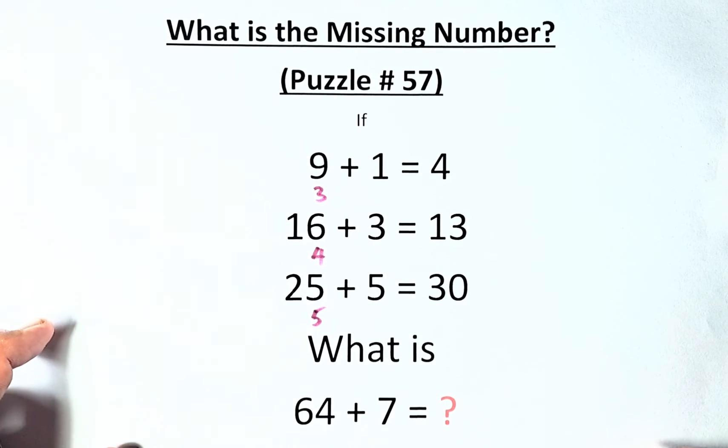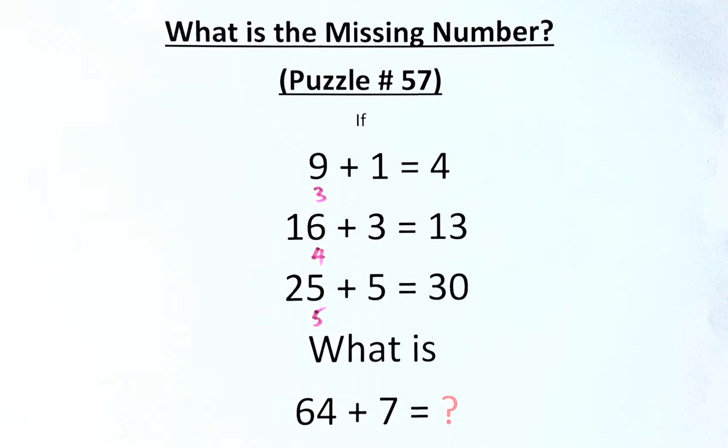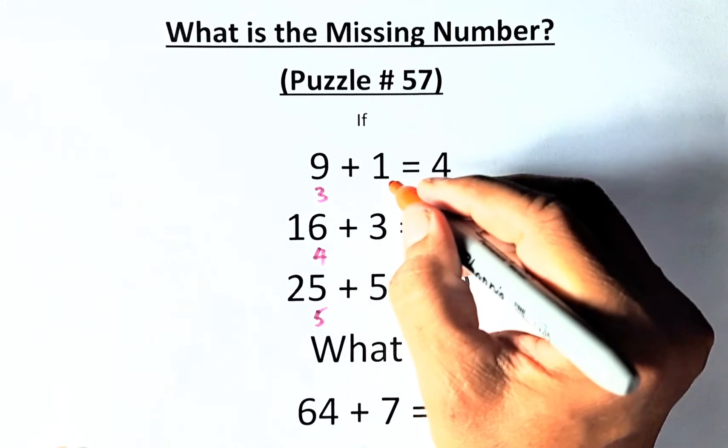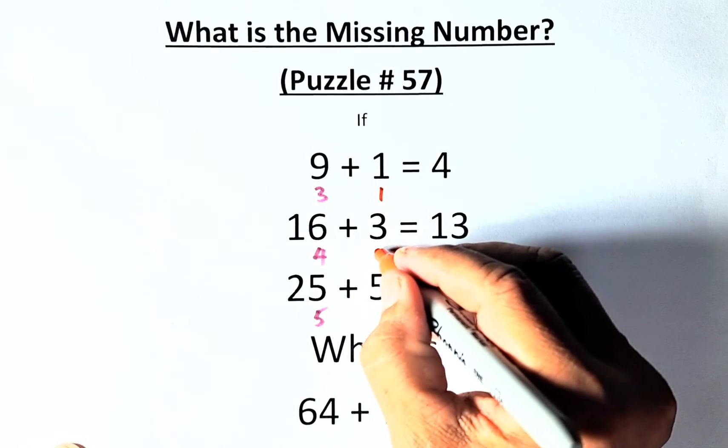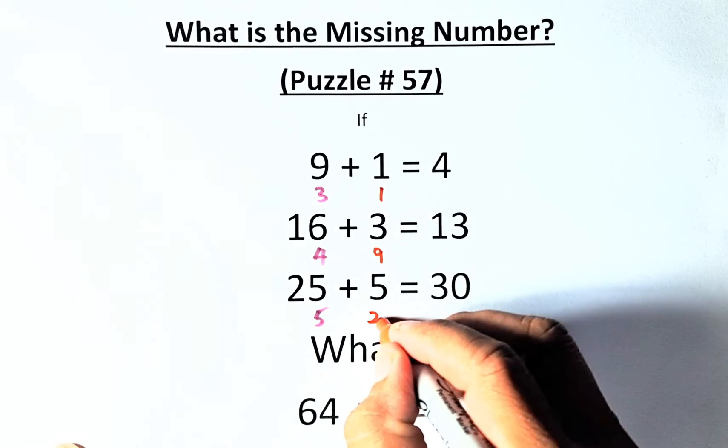On the other hand, on the second number, 1, 3, 5, what you're going to do is square the number. 1 squared is 1, 3 squared is 9, 5 squared is 25.